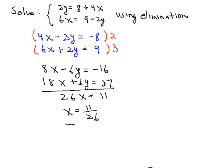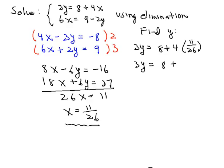Now to find y I think what I'm going to do is go back and use the first original equation and we'll then have that 3y is equal to 8 plus 4 times the quantity 11 over 26 and continuing then 3y is equal to 8 plus 44 over 26.